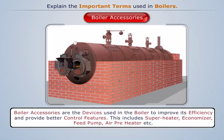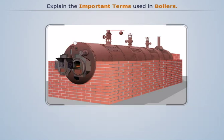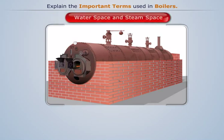Boiler accessories: these are the devices that are used in the boiler to improve its efficiency and provide better control features. This includes superheater, economizer, feed pump, air preheater, etc.